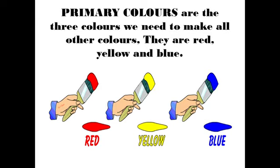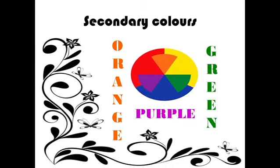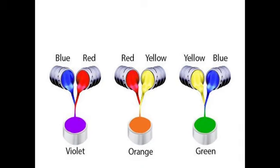Now let's learn how we can make different colors. These are secondary colors — orange, purple, and green. When we mix red and blue, we get purple or violet color. When we mix red and yellow, we get orange color. And yellow and blue makes green. So: red and blue makes violet or purple, red and yellow makes orange, and yellow and blue makes green.